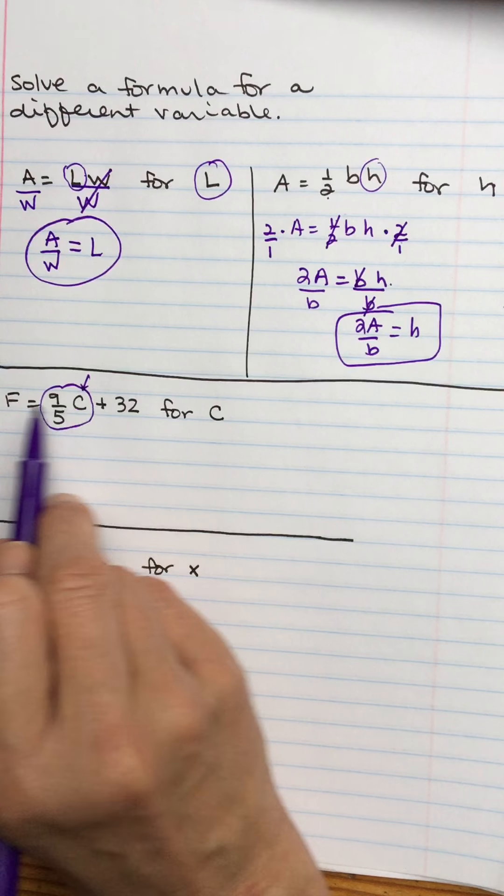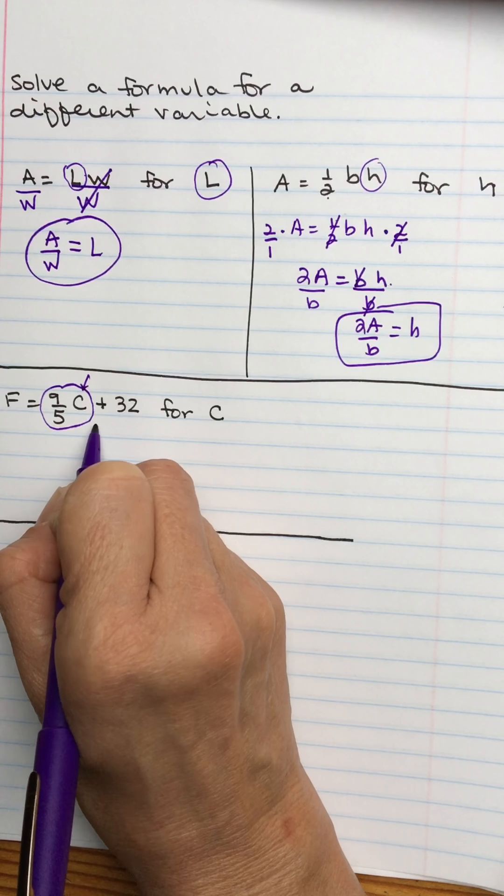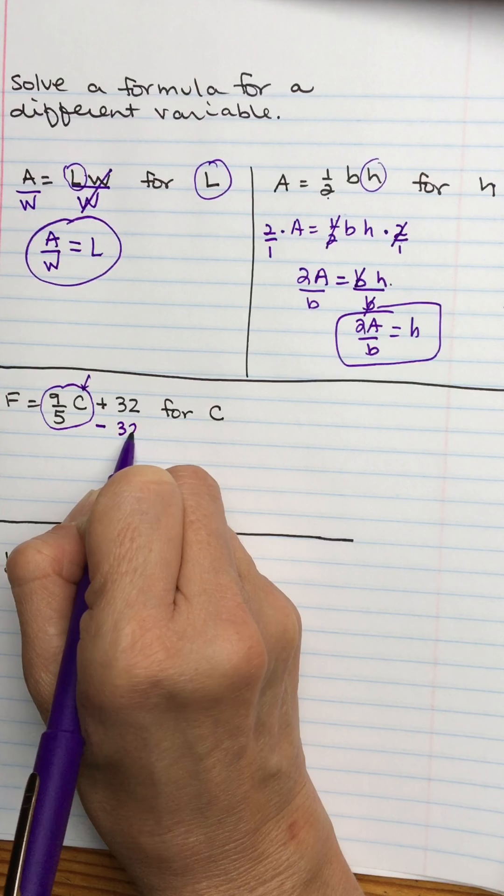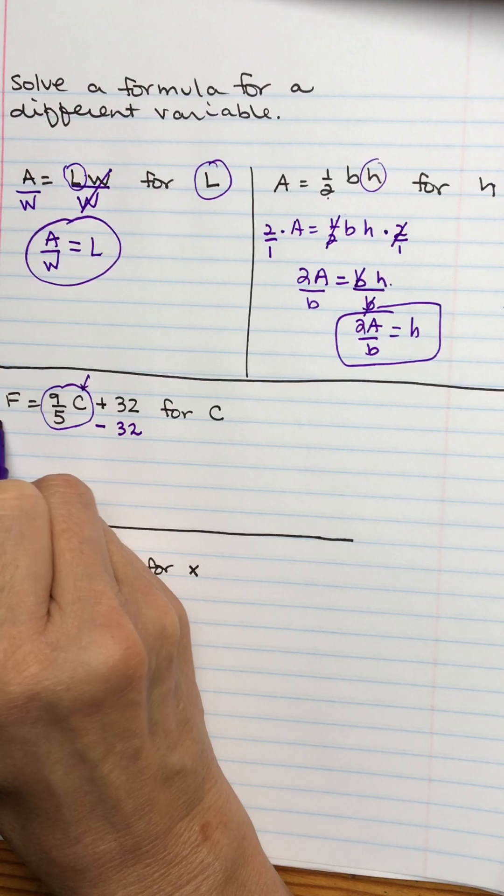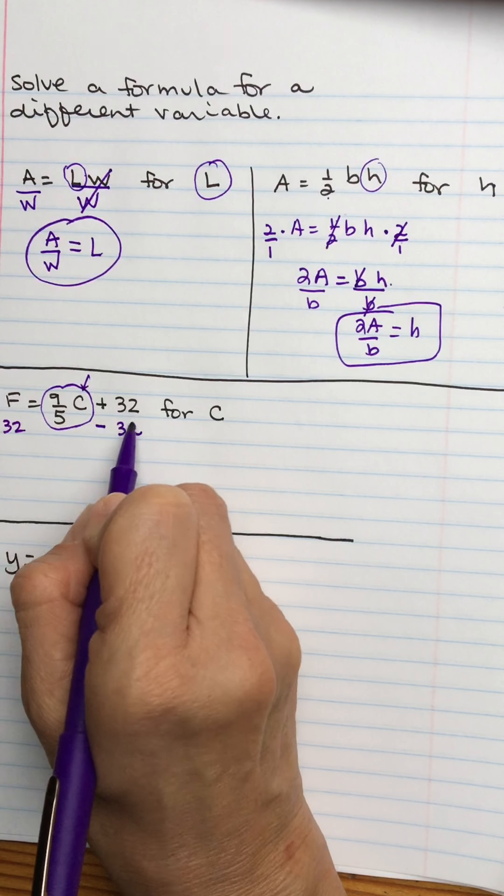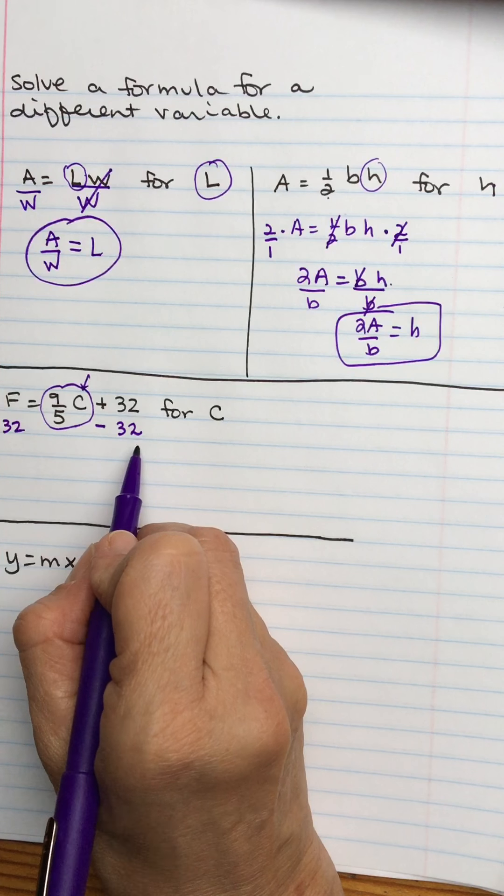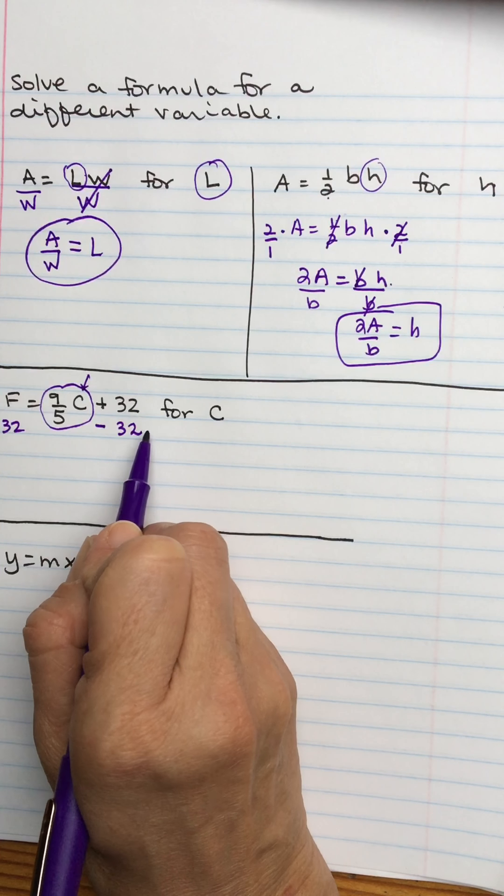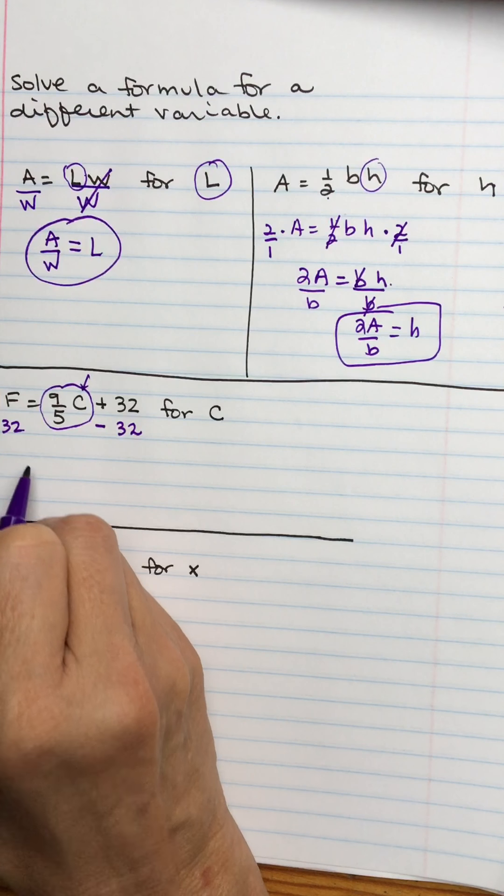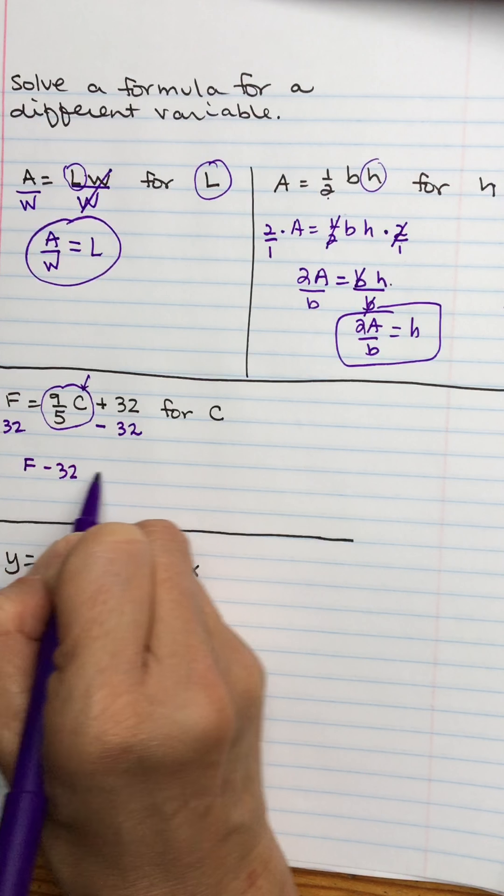First thing we're going to do is isolate the term with the new variable in it. So that means I've got this plus 32. I need to get rid of that, or what I also will say is I need to move it to the other side. So to get rid of a plus 32, what I'm going to do is subtract 32. Another way you can think about that, it's the entire term of 32 that I'm moving. And if I move an entire term, I do it with addition or subtraction. So to get rid of the 32, I would subtract.